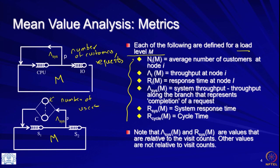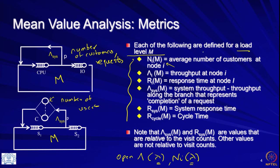Every metric in a closed queuing system is a function of the load level, just like in the open queuing system every metric was a function of the arrival rate. Here we put m explicitly because mean value analysis is an iterative algorithm where we derive all parameters starting from n_i(m-1) to get n_i(m). It is required notation to put m in brackets as an explicit argument of all metrics.